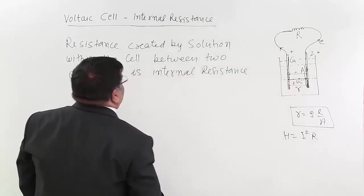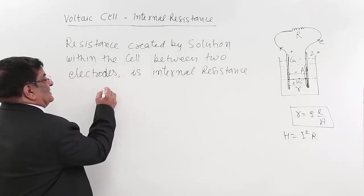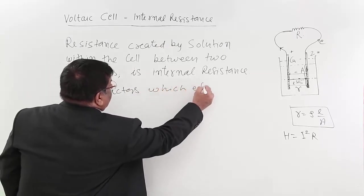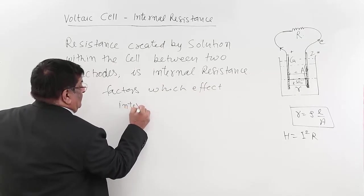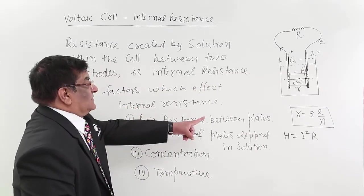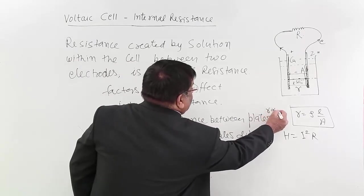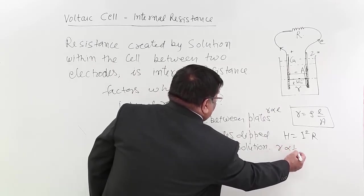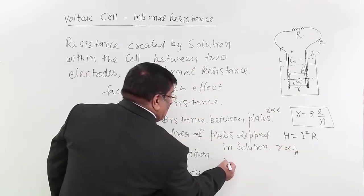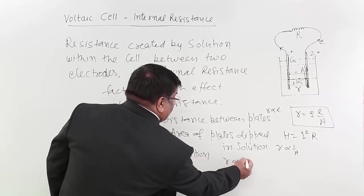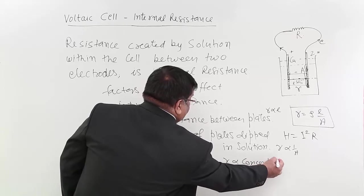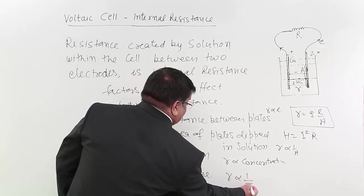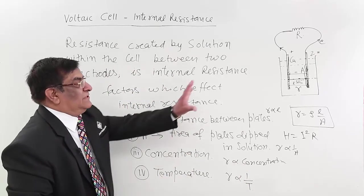We will write the factors which affect internal resistance. Length distance between the plates - R proportionate to length. Area of the plates dipped in the solution - R is inversely proportionate to area. Concentration - R proportionate to concentration. Temperature - R is one upon temperature. So these are the dependence of internal resistance like any other normal resistance.